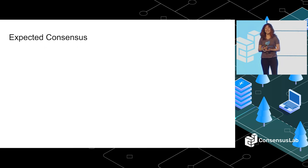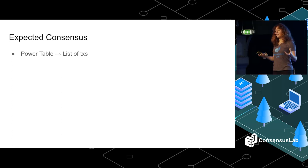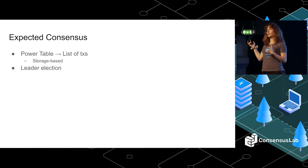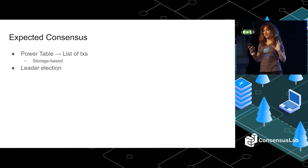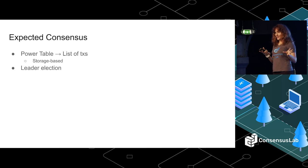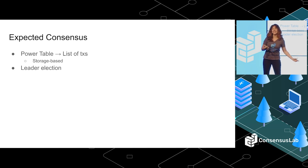Now let me explain quickly how expected consensus works. We have a weighted list of participants, which we call the power table. In Filecoin, this set of participants is weighted according to storage. Like in many consensus protocols — as Marco mentioned in his talk earlier today — our consensus protocol, if you ignore storage, is very similar to a proof-of-stake consensus protocol. So there is a leader election mechanism.